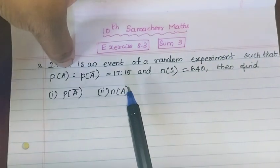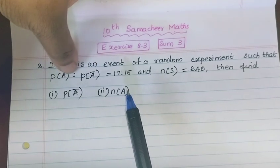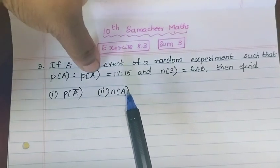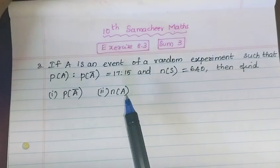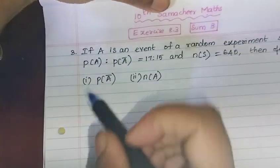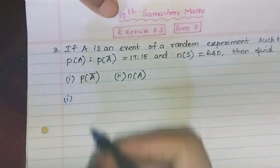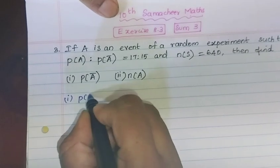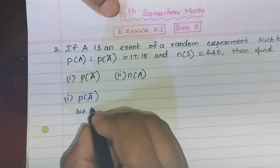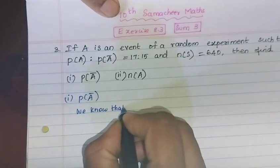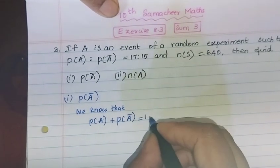Such that P of A and P of A complement. A complement is equal to 1. We know that P of A plus P of A complement is equal to 1.